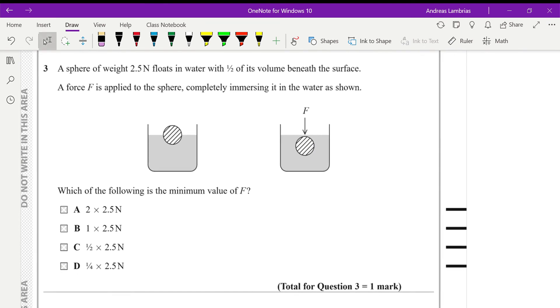This question is about upthrust. We have a sphere of weight 2.5 newtons. Therefore, the weight is 2.5 newtons and is floating in the water with half of its volume submerged in the water. So it's floating. It means that the upthrust should be equal to the weight. Otherwise, it wouldn't float. It's stationary, not moving. Therefore, upthrust and weight are the same. Now, upthrust depends on the volume of the submerged object. So that upthrust is caused by half of its volume.